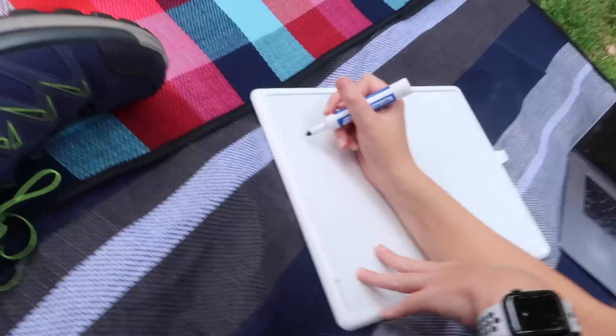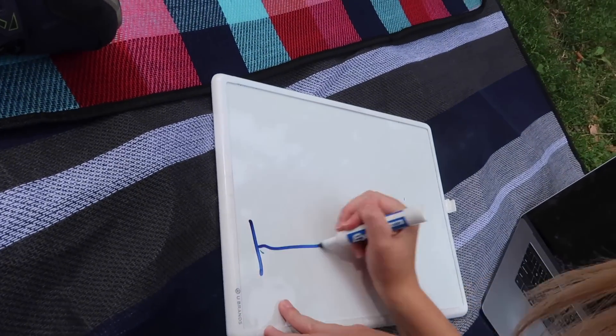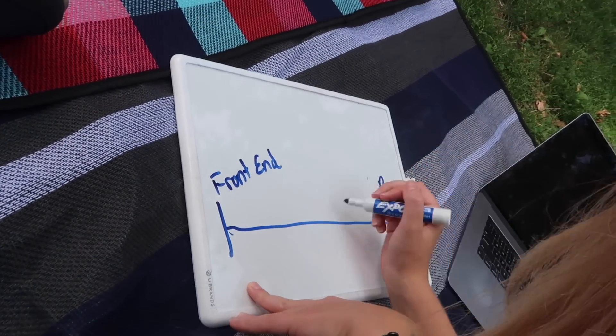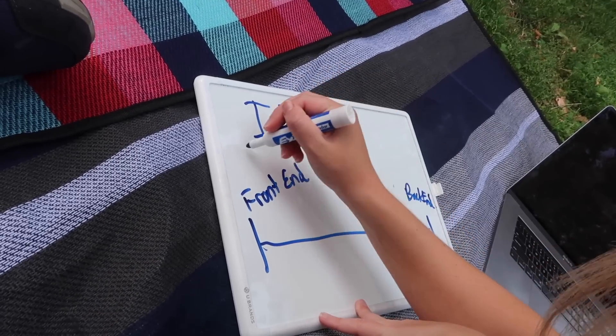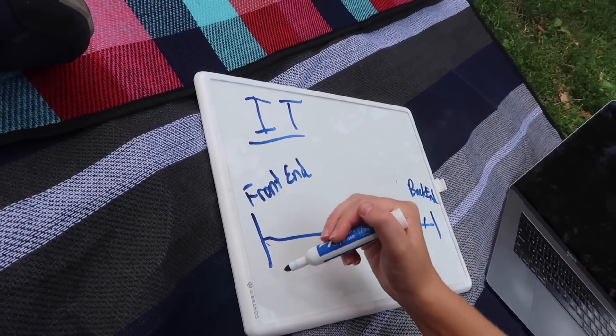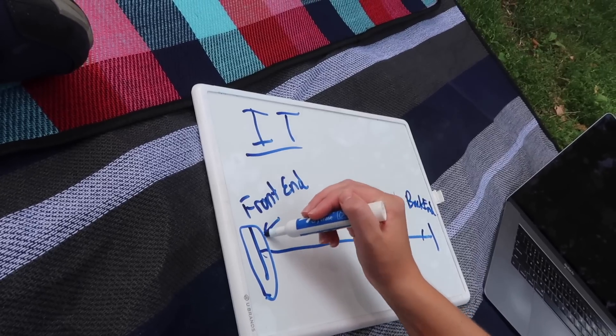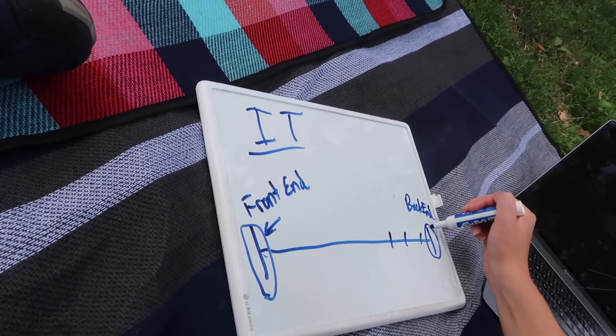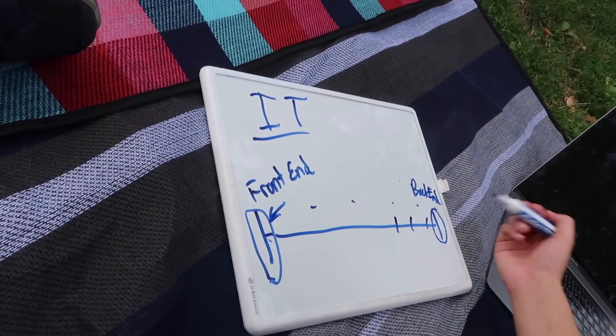An integration test is when you test a feature from end to end. End to end can mean different things to different people, to different teams, to different engineering leaders. End to end could mean from the front end — from when the person clicks the button — all the way to the back end, and every single little thing in between.